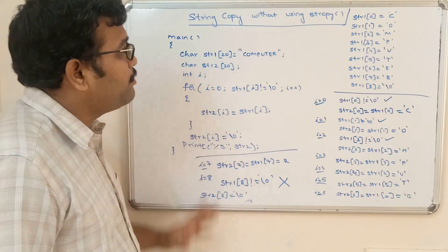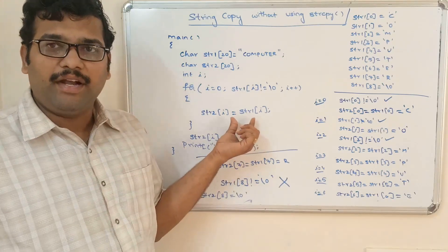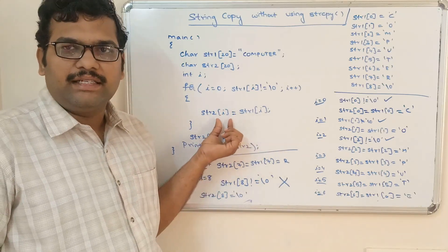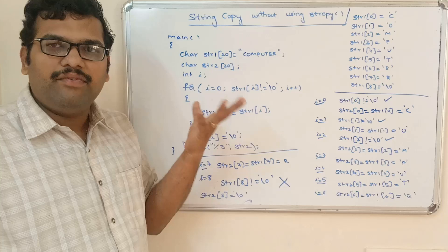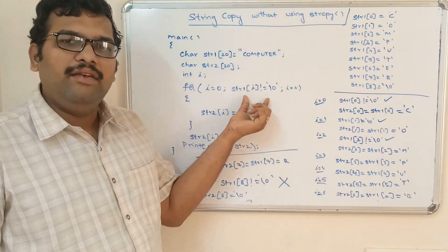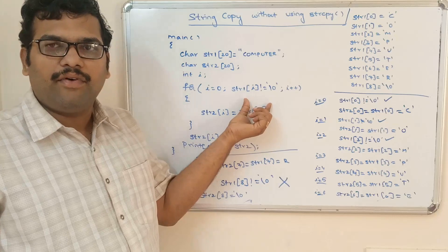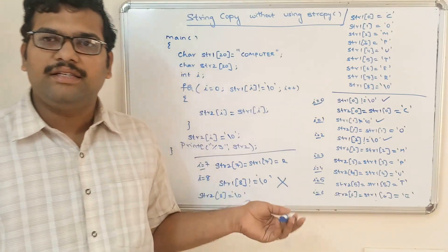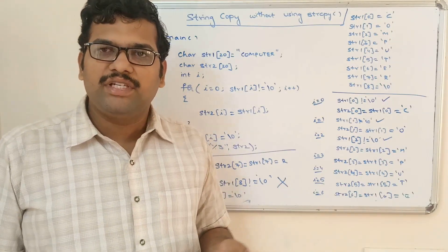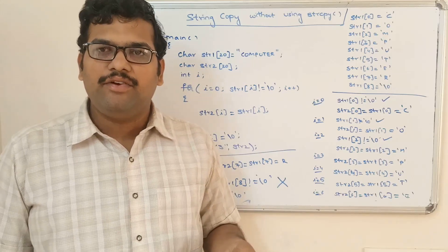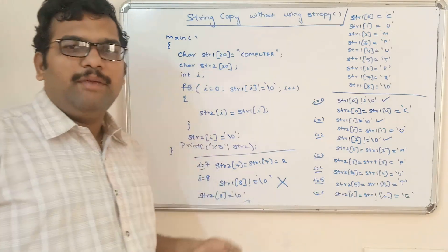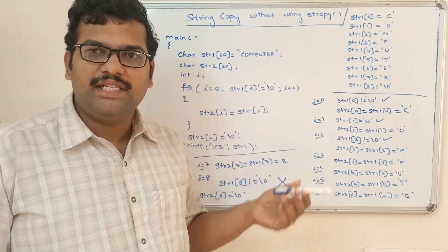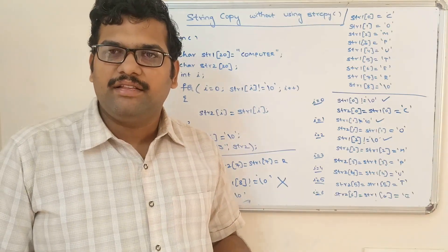The logic is simple: a single assignment copies each character of the first string to the second string, continuing until the null character of the first string is reached. If you have any doubts regarding this C programming, feel free to post in the comment section and I will try to clarify regularly. If you like my videos, share with your friends and subscribe to my channel for more C programming videos. Thanks for listening!